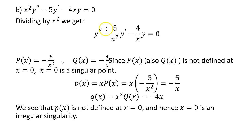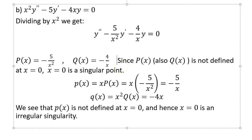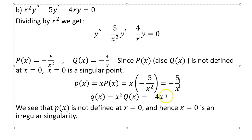However, look at the following example. When you divide by x squared you see it is singular, but this time when you compute lowercase p(x) and lowercase q(x), q(x) is okay but p(x) is negative 5 over x, so at x equal to 0 this lowercase p(x) is undefined. In that case it's a bad thing — we can't use the Frobenius method — so we say it's an irregular singularity.